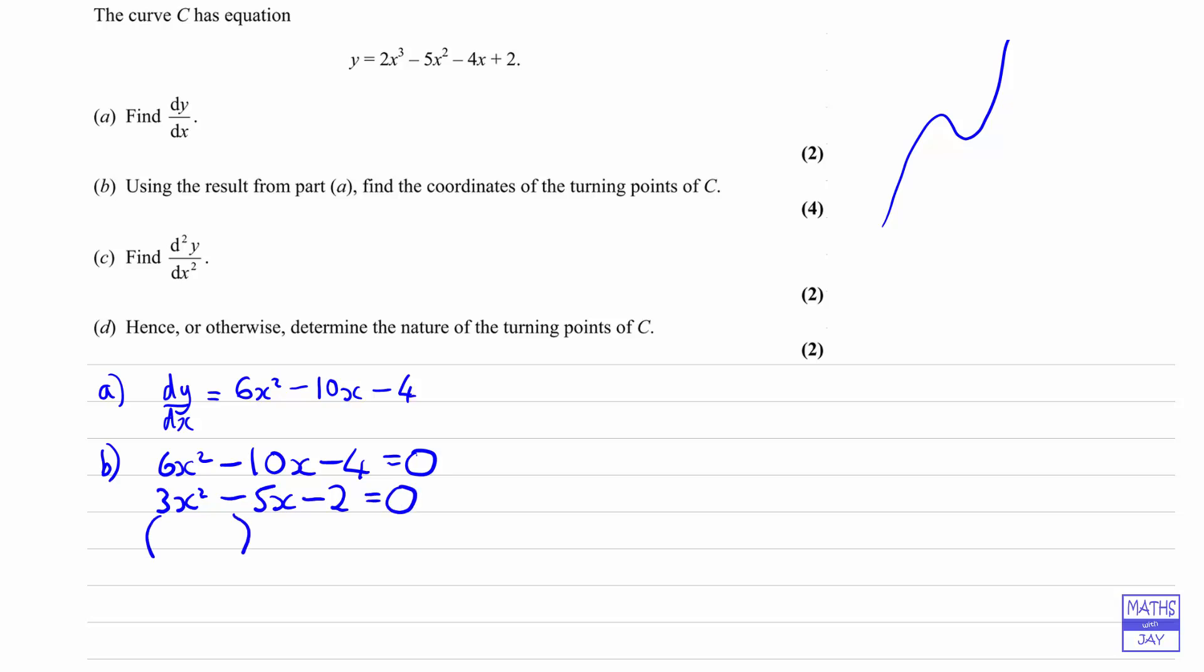Very simple to factorize, as we've got a prime number multiplying the x squared and a prime number as our constant. So to get 3x squared it must be 3x and x. There's a negative in front of the constant term, so we must have a plus in one bracket and a minus in the other. We end up with plus 1 and minus 2, so either 3x plus 1 is 0 or x minus 2 is 0. So our turning points are going to be when x is equal to negative 1 third and the other one will be when x is equal to 2. As expected we've found that we have two values for x.